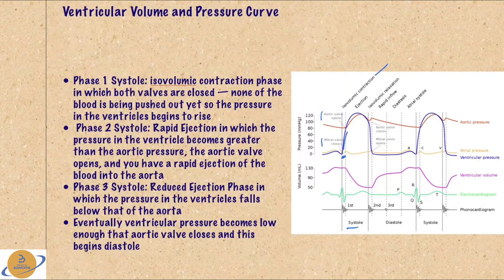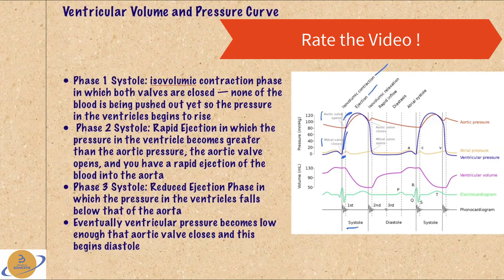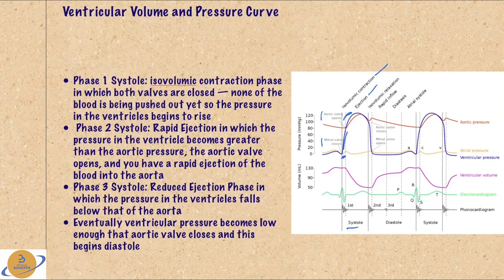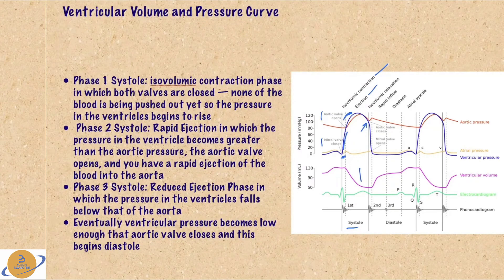Then we have the second phase — the rapid ejection phase — where the ventricular pressure is above the aortic pressure and blood is pumped into the aorta. As the ventricles keep pumping blood to the aorta, the pressure falls, but blood continues to the aorta due to inertia from the contraction. Eventually, the ventricular pressure falls enough to where the aortic valve closes. Before that, we have the reduced ejection phase — the third phase of systole — which corresponds with the T wave in the EKG.